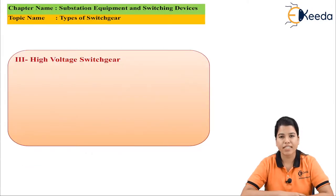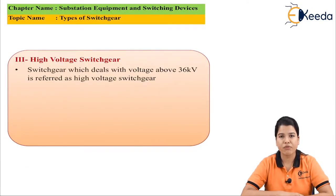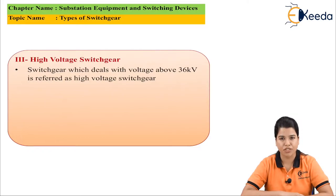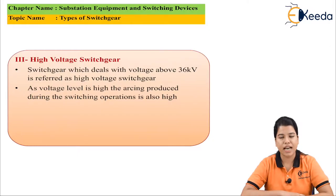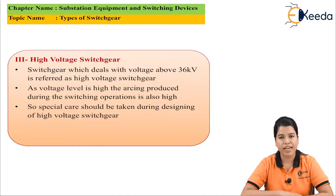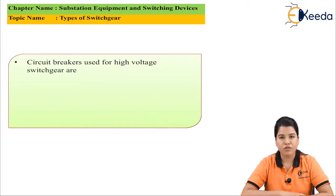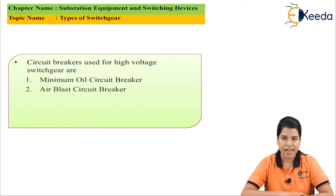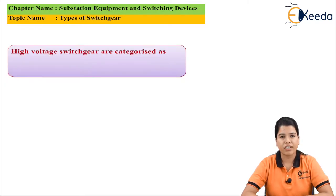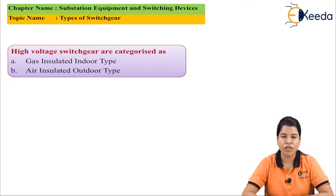The next type is high voltage switchgear. Switchgear which deals with a voltage rating of 36 kV and above is called high voltage switchgear. As the voltage level is high, the arc produced during switching is also very high, hence special care should be taken while designing the operators of the switchgear. The circuit breakers used for this type are minimum oil circuit breaker, air blast circuit breaker, and SF6 circuit breaker. High voltage switchgear is further divided into gas insulated indoor type and air insulated outdoor type.